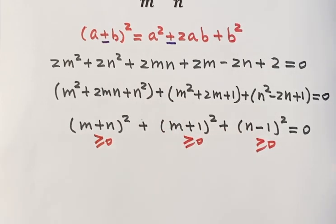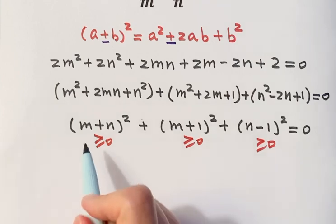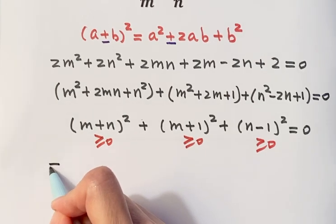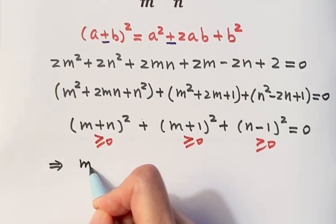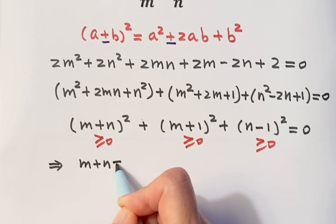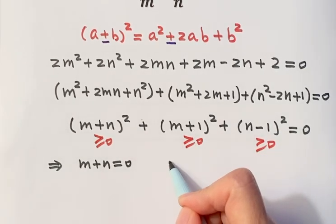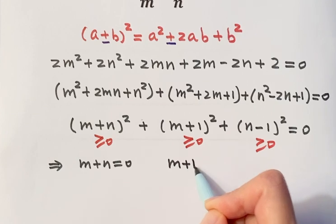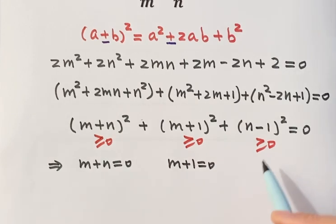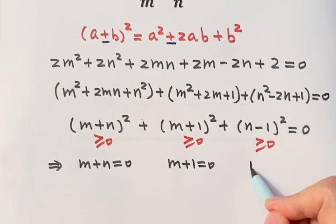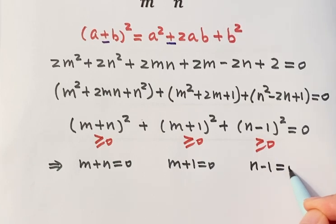So this implies m plus n equals 0. So here, m plus 1 equals 0. From here implies n minus 1 equals 0.